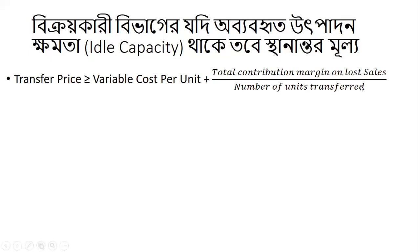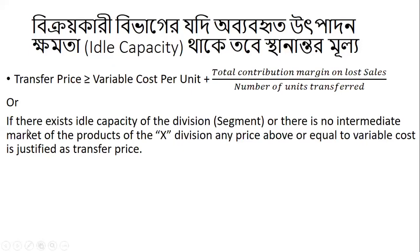The total contribution margin on the lost sale divided by the number of unit transfers. If there exists idle capacity of the division or there is no intermediate market for the products of Division X, the selling division, any price above or equal to variable cost is justified as the transfer price.